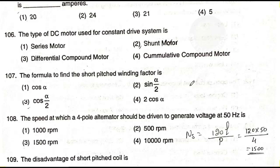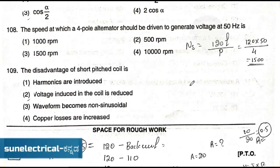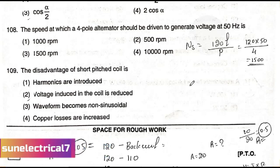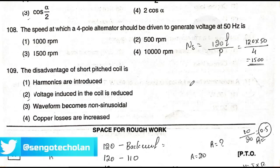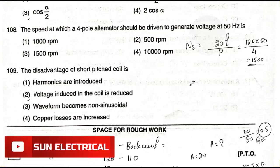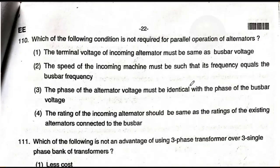Question number 109: The disadvantage of a short pitch coil is — option one: harmonics are introduced; option two: voltage induced in the coil is reduced; option three: waveform becomes non-sinusoidal; option four: copper losses are increased. The answer is option two — voltage induced in the coil is reduced. The short pitch coil reduces the induced voltage.